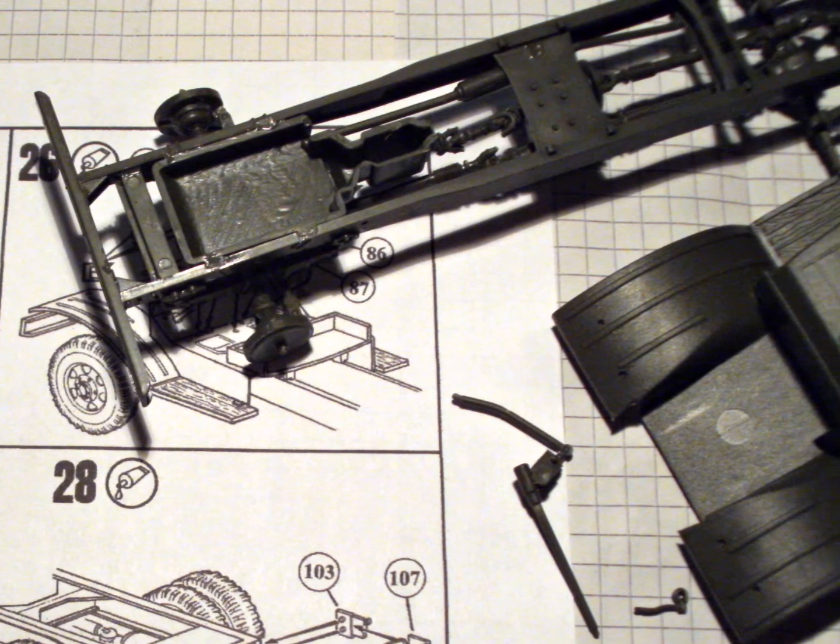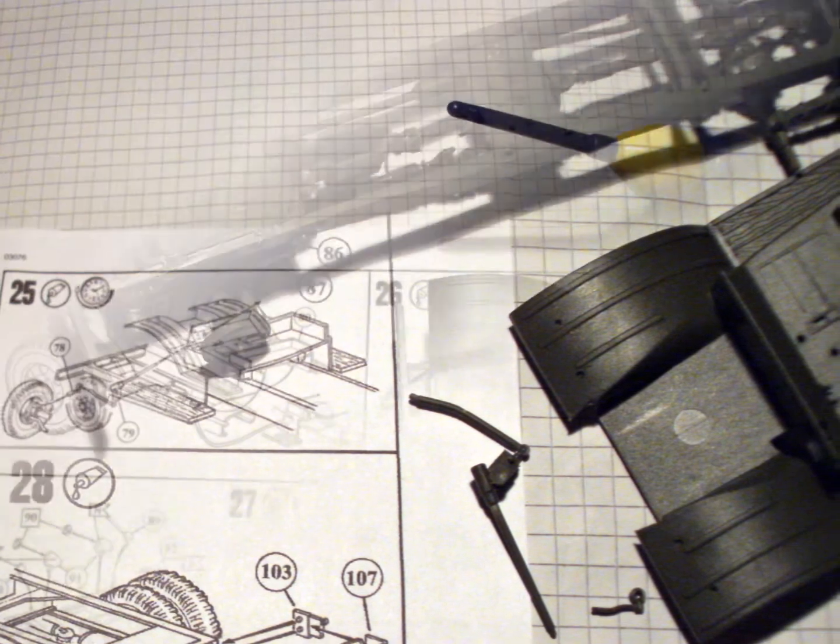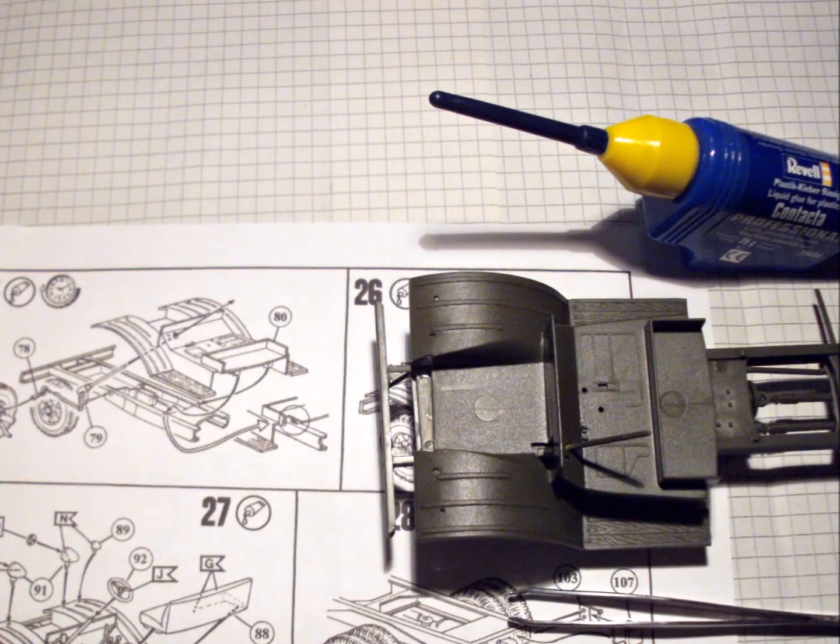After gluing the steering column to the chassis, I dry fitted the cabin floor, then I took it off again to assemble the interior.